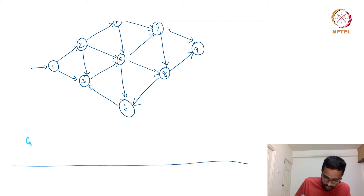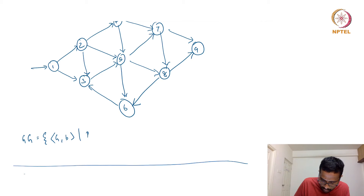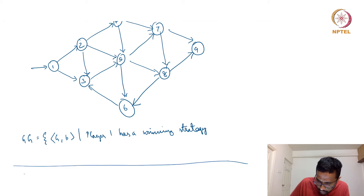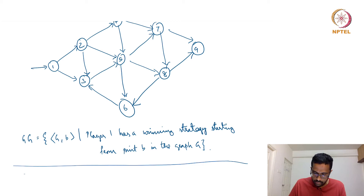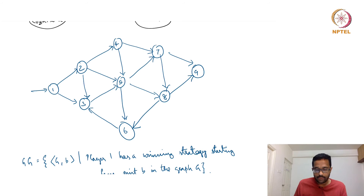Formally, Generalized Geography is defined as the set of pairs (G, b) — a graph G and a starting position b — such that player one has a winning strategy starting from point b in graph G. The goal is to identify who has a winning strategy.